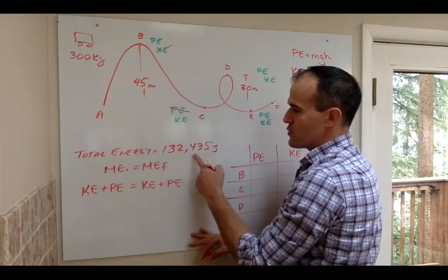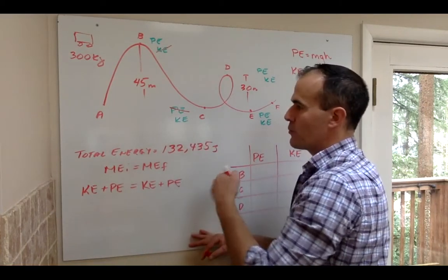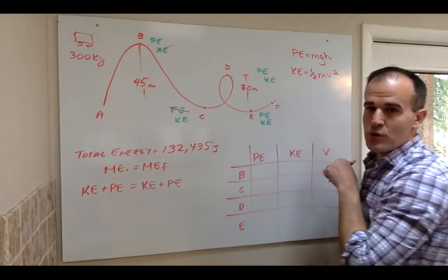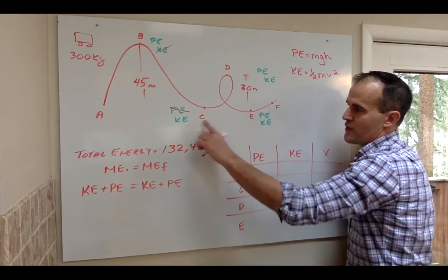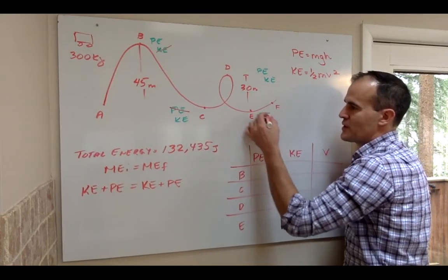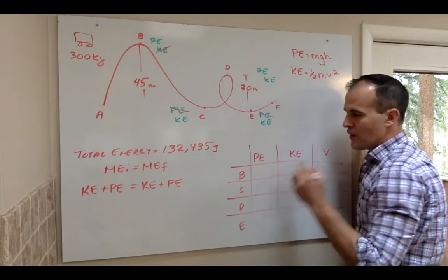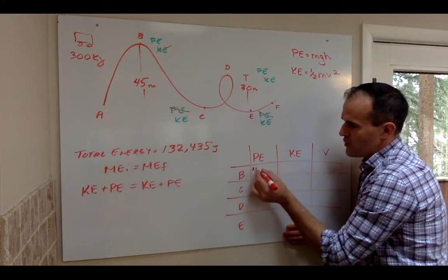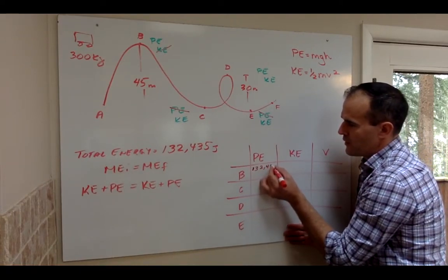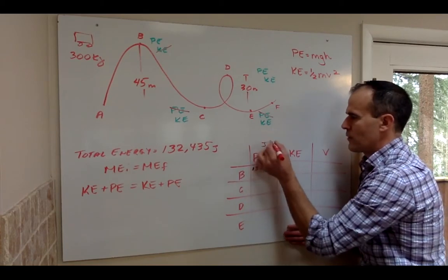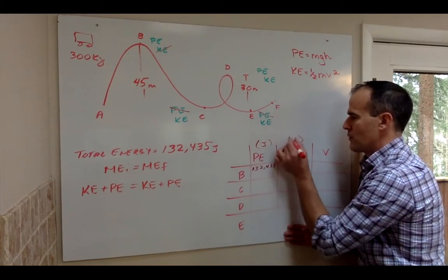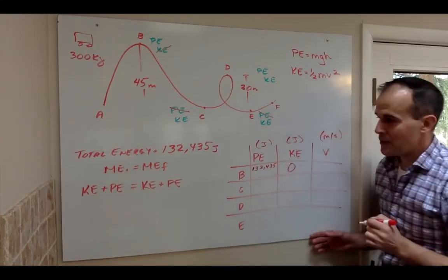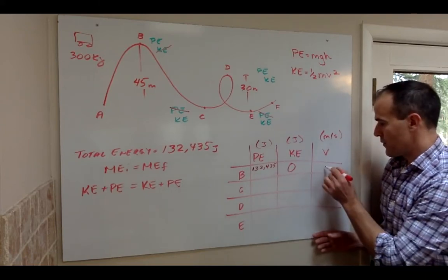For example, when you get down here to position C, you're going to have no more height. So that total energy is going to be in the form of kinetic. So we'll be able to pull the velocity out. A little trickier at D here because we're going to have both types. Show you what to do when we get there. And then down here, position E, it's very much the same as position C. So we have no more potential, it's all kinetic. Let's start filling in the chart here. So position B, we know total energy is 132,435 joules. So you have no kinetic energy at the top there. You're not moving yet, so you have no velocity there.